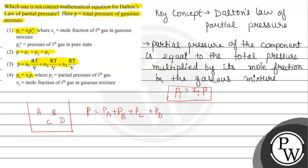So we have a second option that defines this: P is equal to P1 plus P2 plus P3. This second option defines Dalton's law of partial pressure correctly.